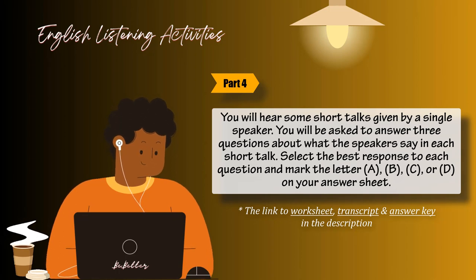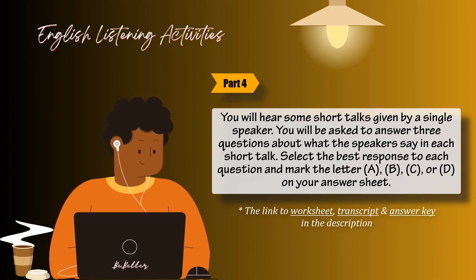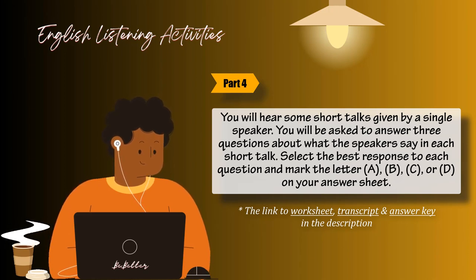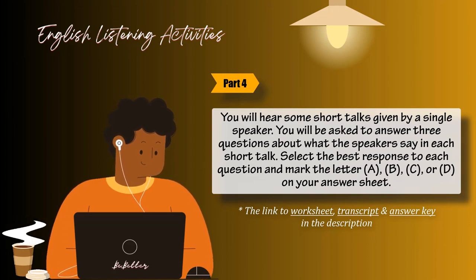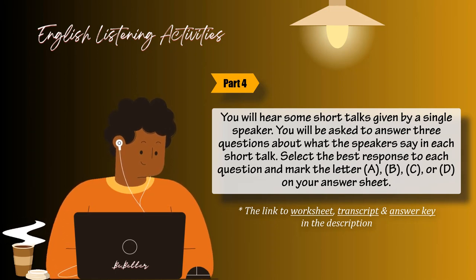Questions 95 through 97 — news report. Number 95: What is the report about? Number 96: How often does the event take place? Number 97: Where is the event being held?